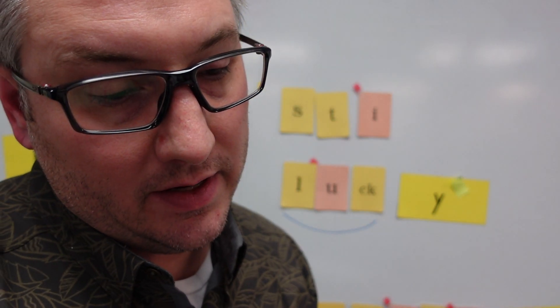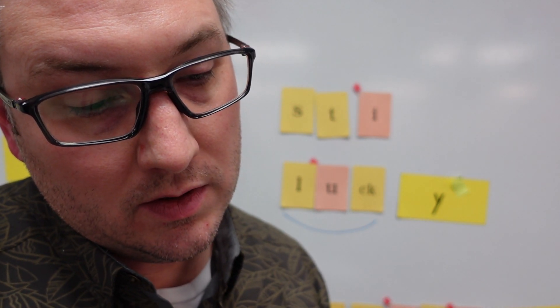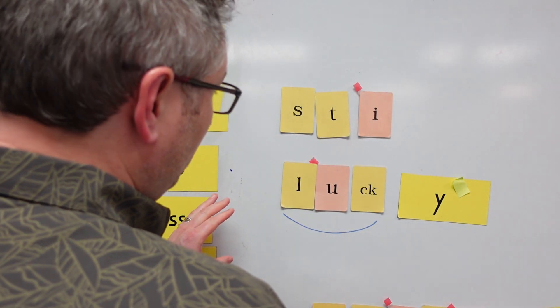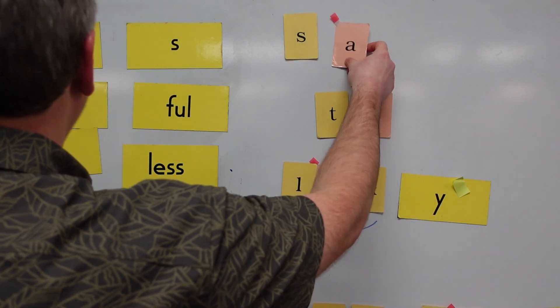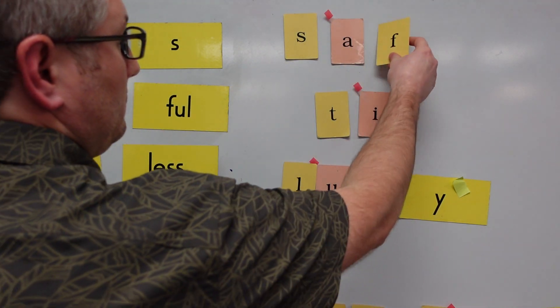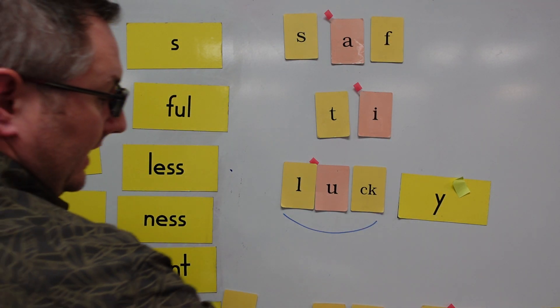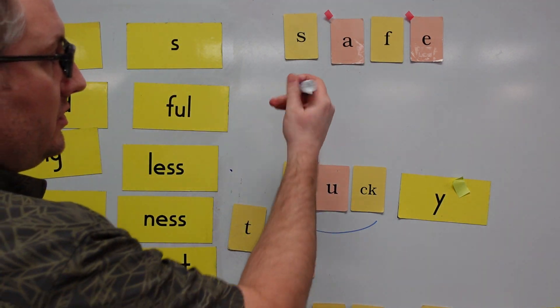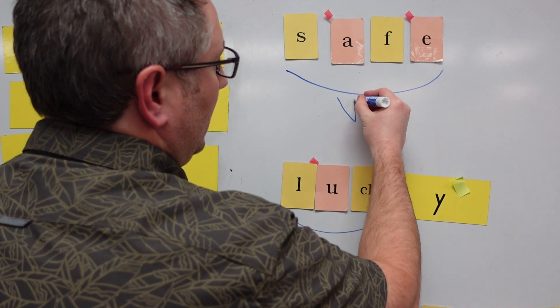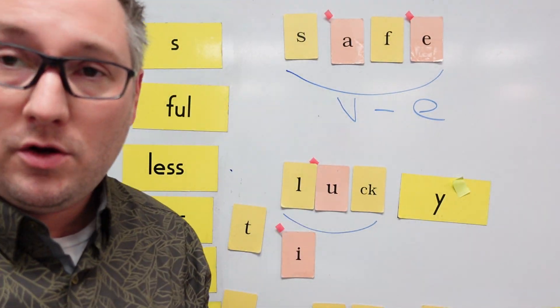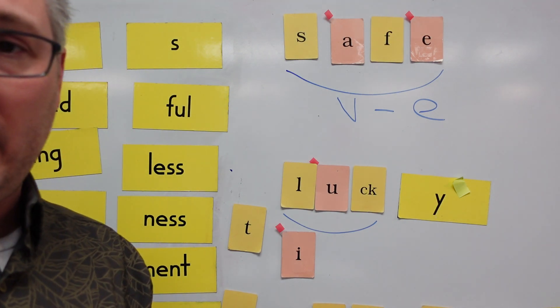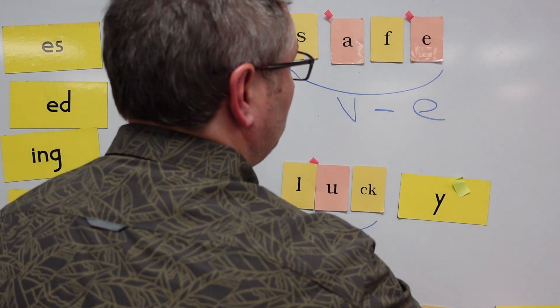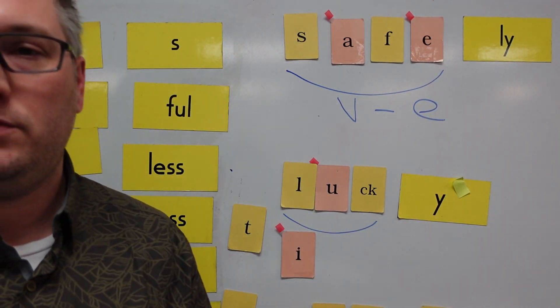One more and then I'll be done. How about safely? Safely. Get my S-A-F. So, my base word is safe. I could scoop it and mark vowel consonant E. Safe. But I can also add the L-Y to the word safe and make it safely. There you go. Safely.